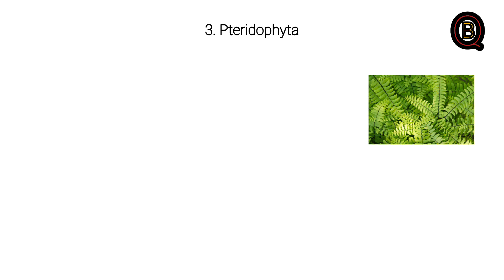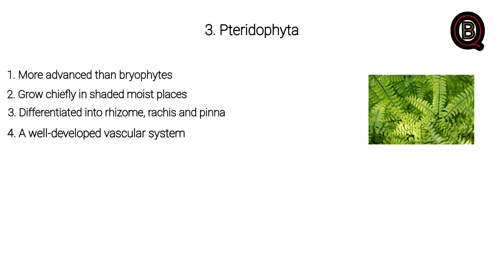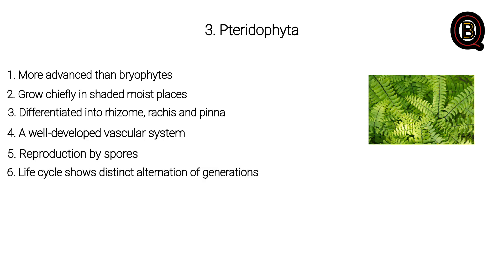Pteridophyta: more advanced than Bryophyta. Grows safely in serious moist places. Differentiated into root, stem, and leaf zones. Roots, stem and leaves present. A well-developed vascular system. Reproduction by spores. Life cycle shows distinct alternation of generations. Examples include ferns.